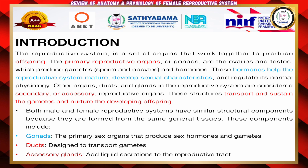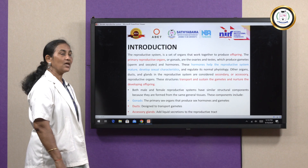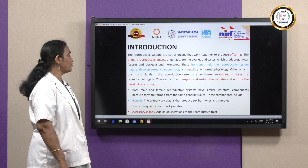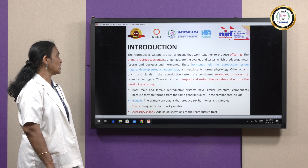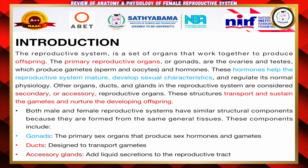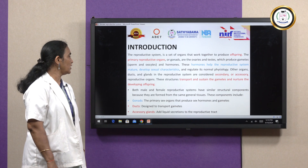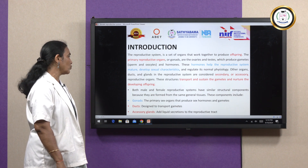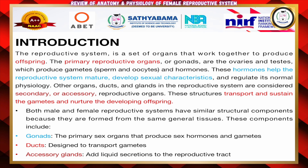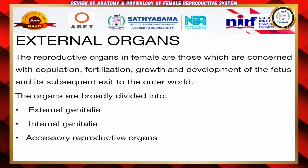Both the male and female reproductive systems have similar structural components because they are formed from the same general tissues. The components are: gonads, which are the sex organs producing sex hormones and gametes; ducts, designed to transport the gametes with the influence of hormones; and accessory glands, which add liquid secretion to the reproductive tract to help throughout the reproductive system for nourishment and producing offspring.